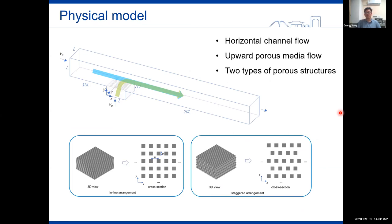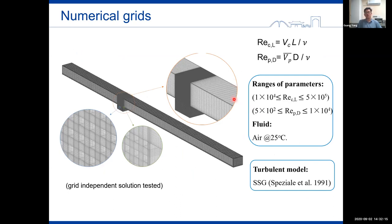As we also want to track the effect of non-parallel flow, the physical model is considered to be a horizontal channel flow and an upward cross-media flow. And two types of pore structures are considered, which are inline and staggered arrangement of elements. Here in the RANS model, much higher Reynolds numbers than the DNS can be reached. And the upper limit is in the order of 10 to the power of 5. And the grid independence has also been tested.